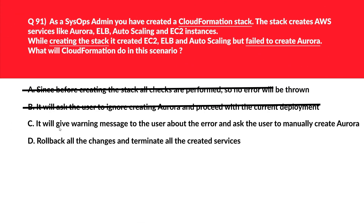Let's look at option C now. It says it will give a warning message to the user about the error and ask the user to manually create Aurora. The basic concept of using a CloudFormation template is to automate manual tasks. If a user needs to manually create AWS resources like Aurora, then no one will use CloudFormation, as it defies the purpose of automation. Therefore, incorrect choice — we'll reject this.